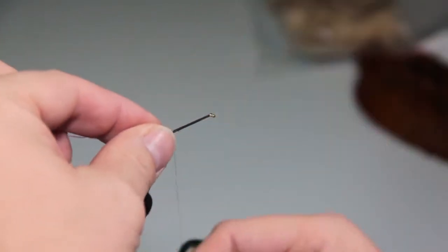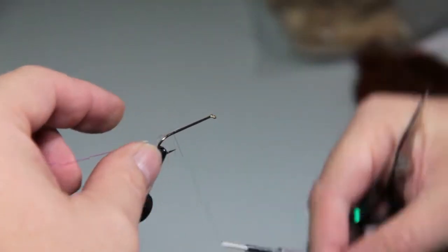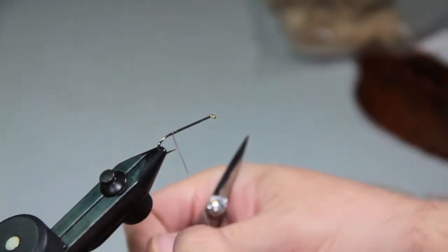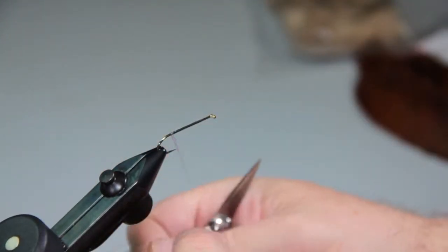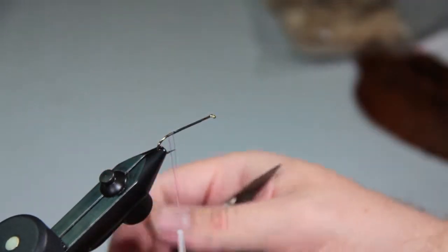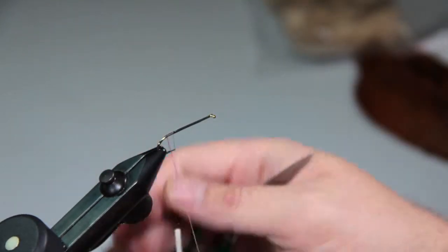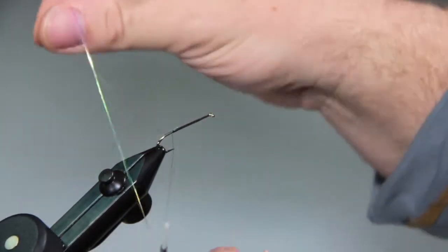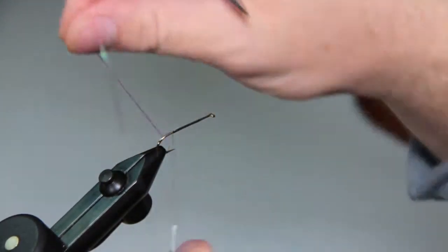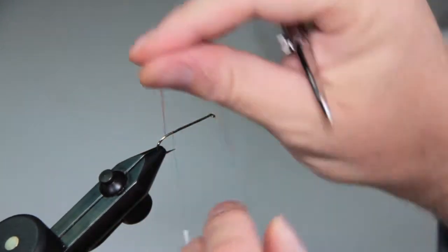A couple strands of pearl flashaboo as a tag. If you want to make these durable lay down just a touch of zap a gap before you get going with it. Generally no more than two strands because they'll split and splay and go crazy on you. Just as that hook starts to bend I'm going to go over and rewrap my way forward.